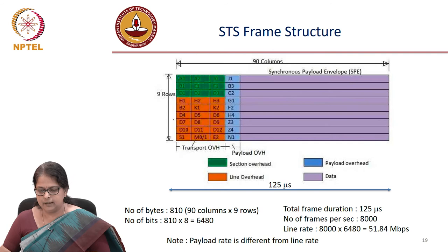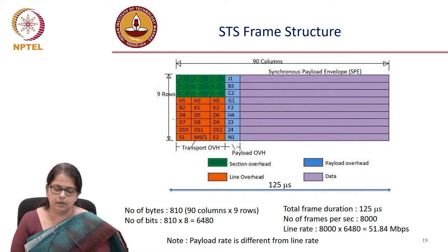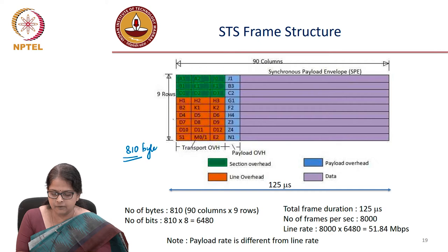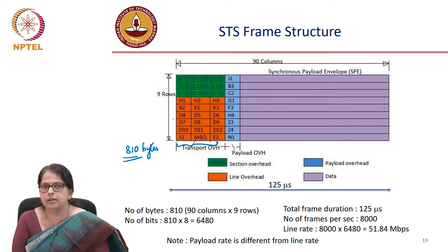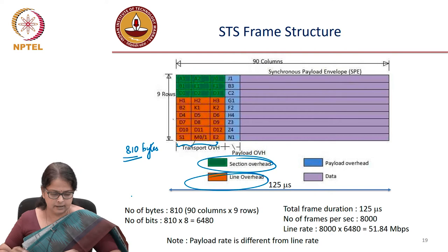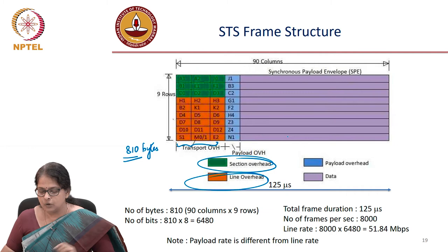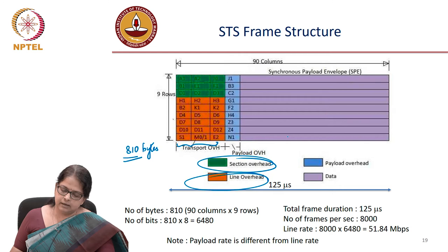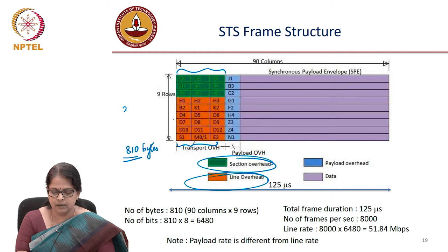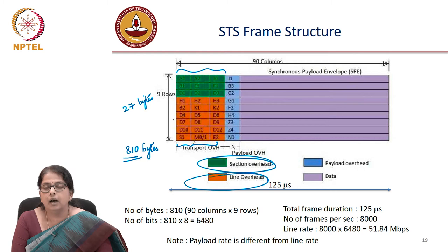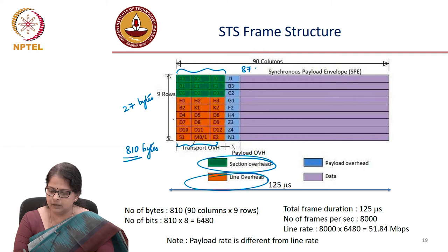We have talked about section layer and optical layer. The frame structure has headers. This is the frame structure: you have 90 columns and 9 rows, giving you 810 bytes of information, of which the first three columns are the header information. We need a section overhead and also a line overhead. Section overhead tells you which section it has to go. Line overhead tells you which add-drop multiplexer it has to target so that the data can get dropped or added at that point. These two addresses require the 9 rows and the first 3 columns — that is 27 bytes taken up by the overheads.